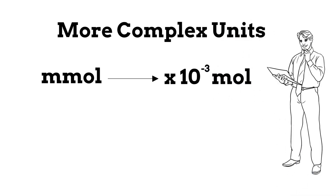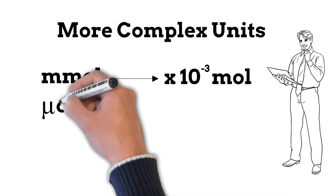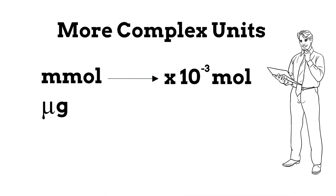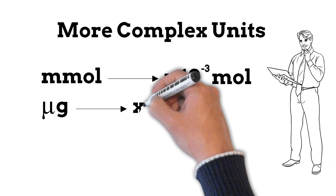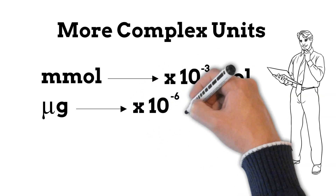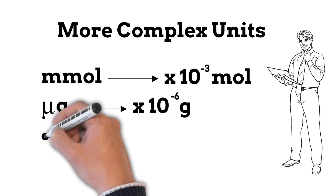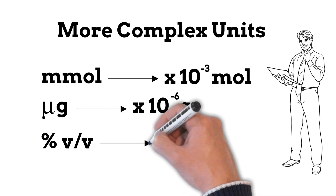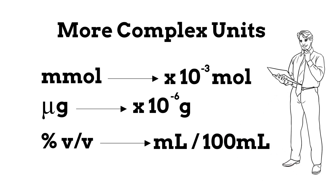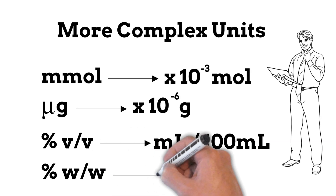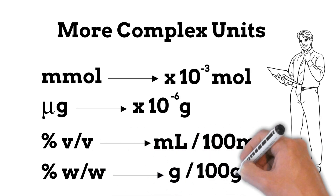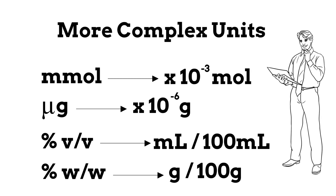There are some more complex units in chemistry. Millimoles is just 10 to the negative 3 moles — the same as milliliters, so use it as a normal conversion. Micrograms are 10 to the negative 6 grams, so if you see the word 'micro' or the symbol µ in front of something, divide by a million. You might also see percentage v/v, which is milliliters per 100 milliliters, or percentage weight per weight, which is grams per 100 grams. Anytime you see that percentage sign, it just means per 100 of the unit.